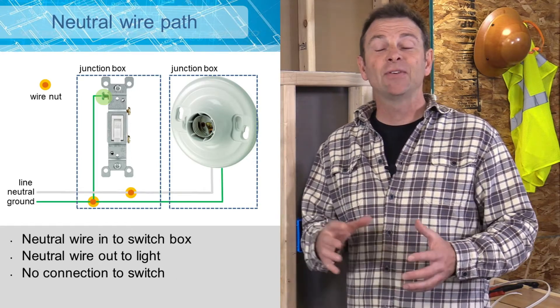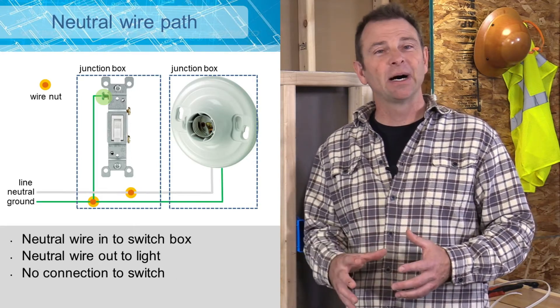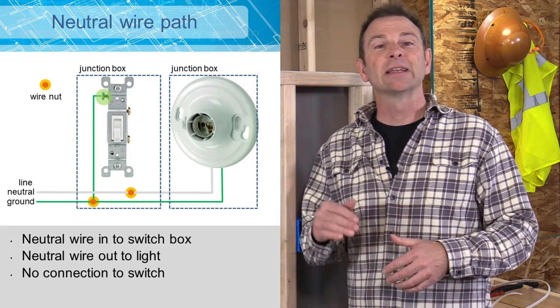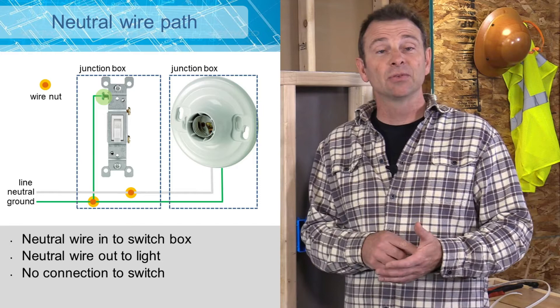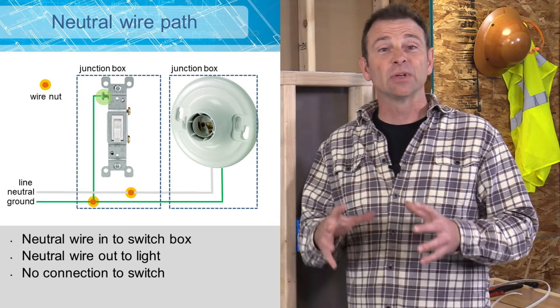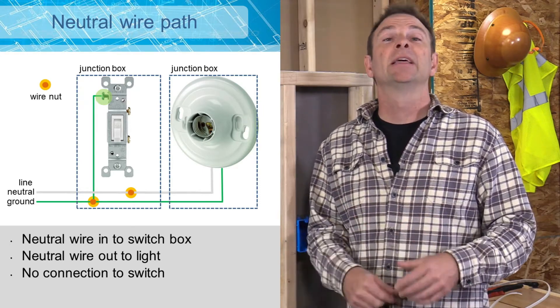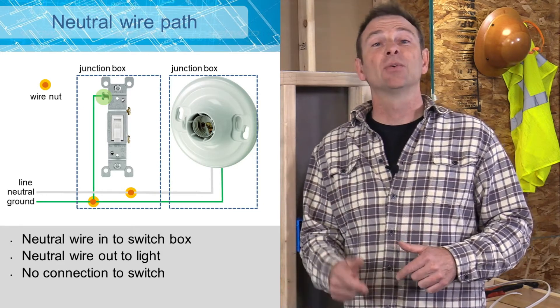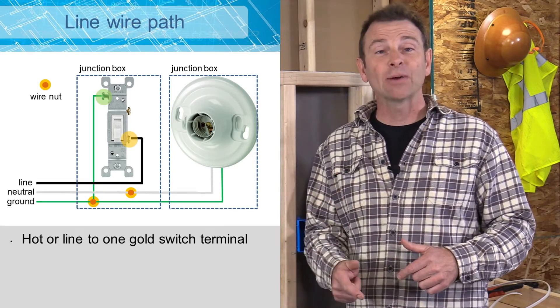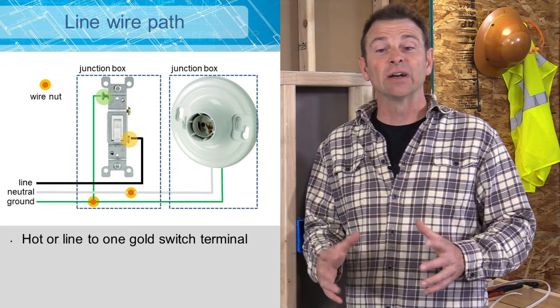Next up is our neutral. If you notice, there's a connection in the box with the neutral that then leaves the box. There's no physical connection of the neutral wire to our device, which is our switch at all. The only wires or conductors that are going to connect to our switch are going to be our black wires, which are our hot wires.